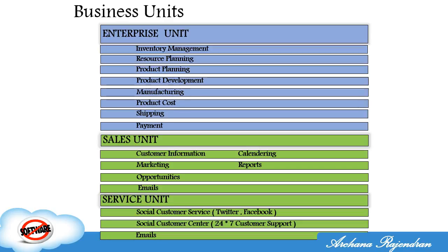If you notice, the enterprise unit is highlighted in a different color, and the sales and service units are grouped together in a different color. Why is that? Why is the enterprise unit separated while sales and service are on the other side? What is the major difference between the enterprise unit and the sales and service units?